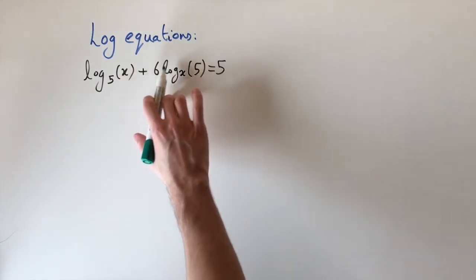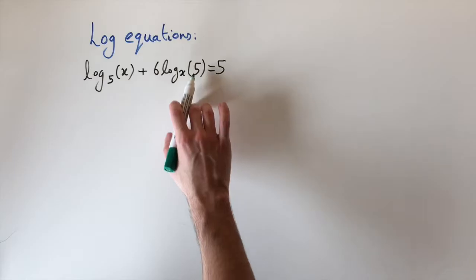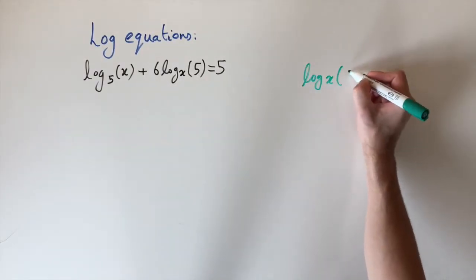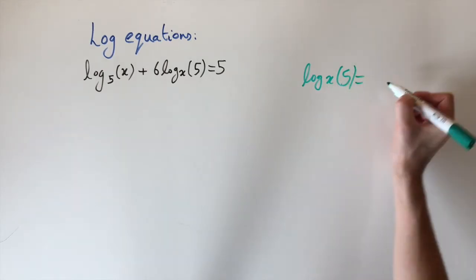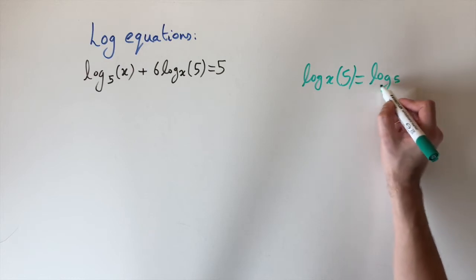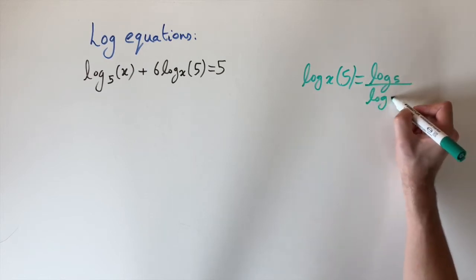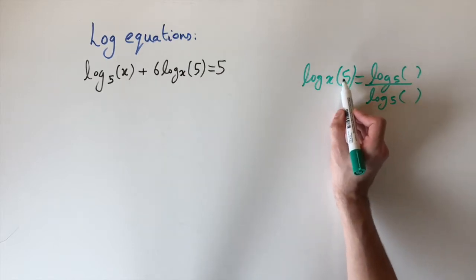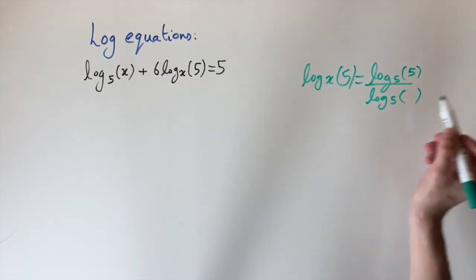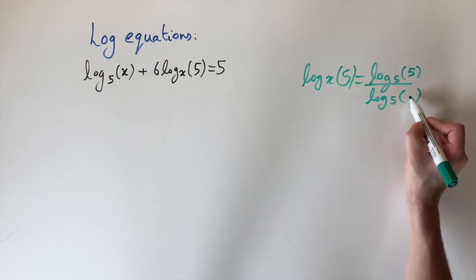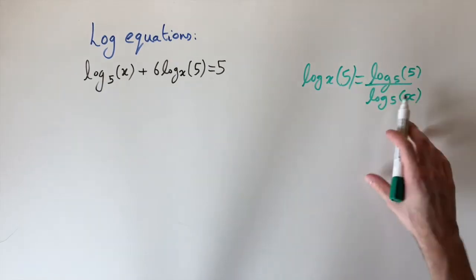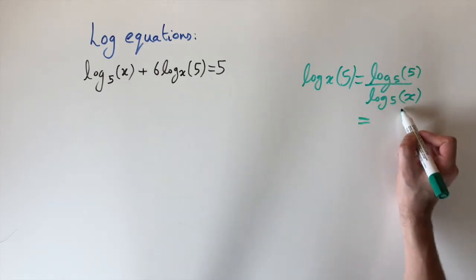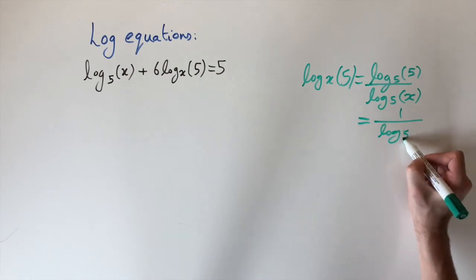To get everything in terms of base 5, we need to use the change of base formula. To express log base x of 5 in terms of log base 5, we write it as the ratio of two logarithms both to the new base. The number in the bracket goes on top and the old base goes on the bottom. Now everything is in terms of base 5, and this simplifies to 1 over log base 5 of x.